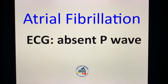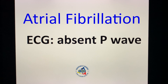What about the absence of a P wave? If the ECG has an absent P wave, or they give you a case of a patient who came in with palpitations and on physical exam there was an irregularly irregular rhythm, and the EKG revealed an absent P wave — your diagnosis would be atrial fibrillation, AFib.